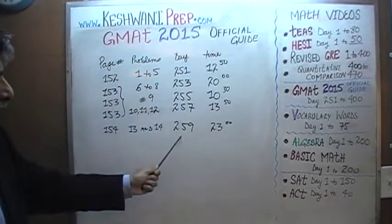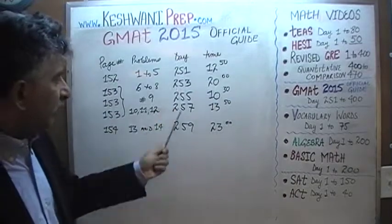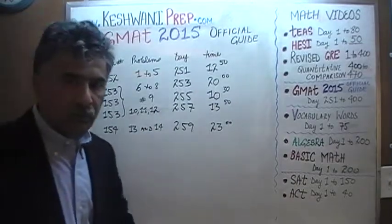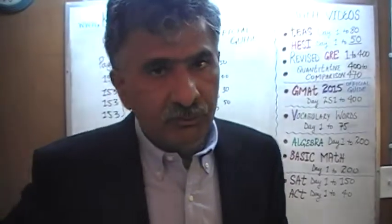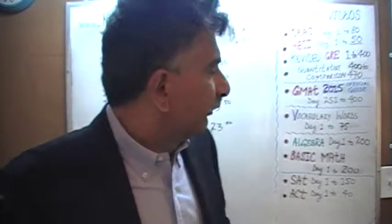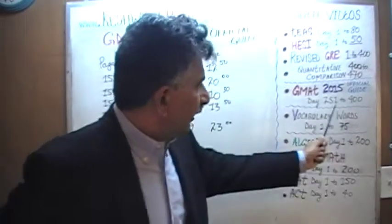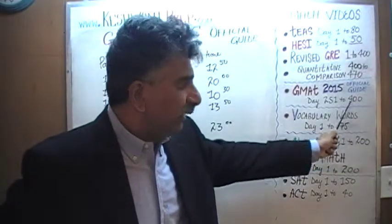Solutions to all the problem solving questions are on the odd numbers. Solutions to all the data sufficiency questions are to be found on even numbers, beginning with 251 and ending at 400.